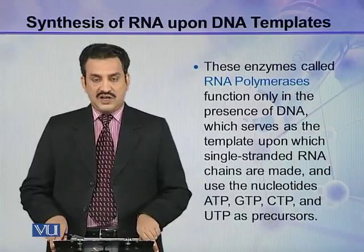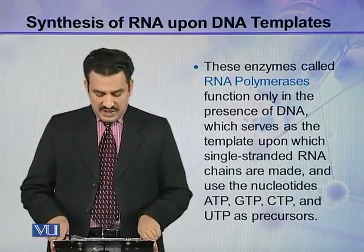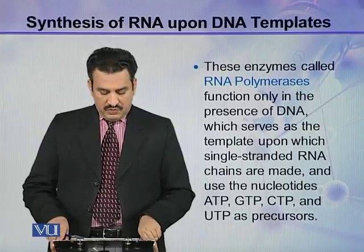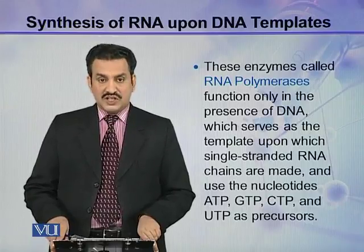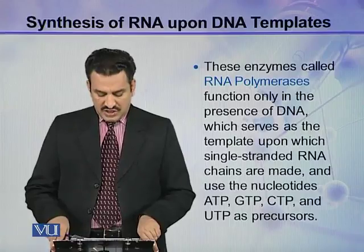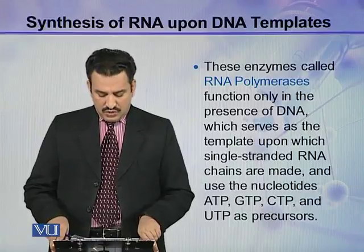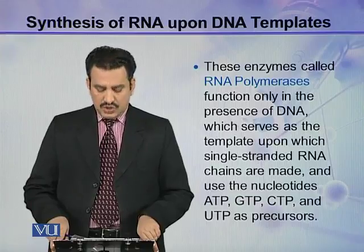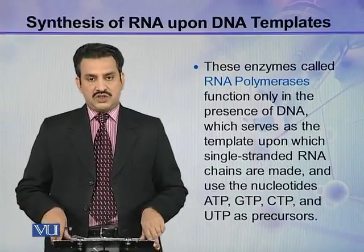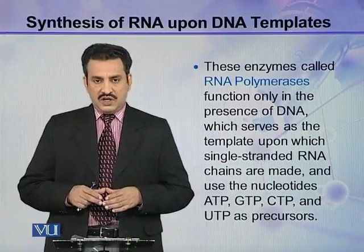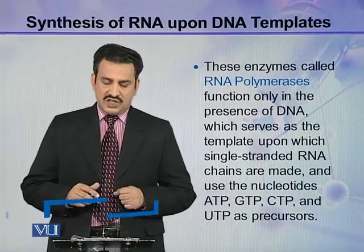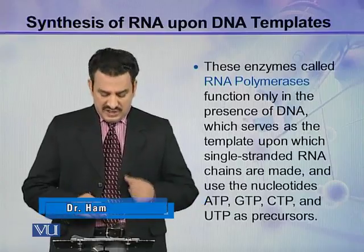These enzymes, called RNA polymerases, function only in the presence of DNA, which serves as the template upon which single-stranded RNA chains are made. They use the nucleotides ATP, GTP, CTP, and UTP as precursors. These nucleotides are used as precursors and the synthesis of the mRNA strand takes place on the DNA.